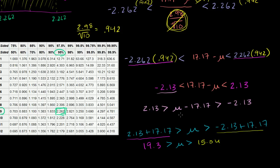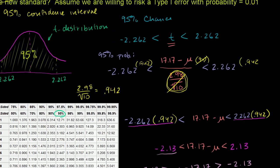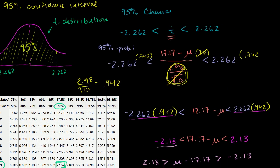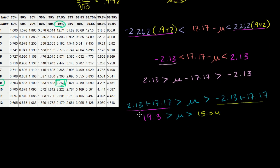Remember, we started with a 95% chance that a random t statistic will fall in the interval, and all we did was a bunch of algebra. So there's a 95% chance that the true population mean — which is the same as the mean of the sampling distribution of the sample mean — will fall in this interval. There's a 95% chance it falls between 15.04 and 19.3, and we're done.